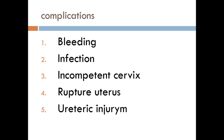Complications of cervical tear include bleeding and infection. If the tear extends to the internal os, the patient will suffer from incompetent cervix, which predisposes to habitual abortion and preterm labor. If the tear extends to the lower uterine segment, ruptured uterus can occur. Also, ureteric injury can occur during repair if the ureter is included in the suture.